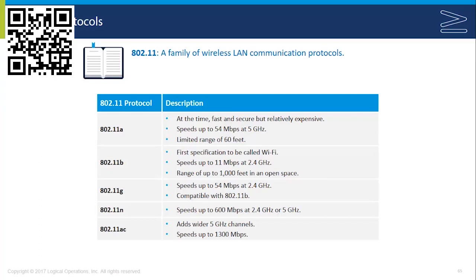802.11a was introduced as very fast and secure but relatively expensive, with limited range. Its goal was to increase speeds and decrease interference, achieving up to 54 Mbps at the 5 GHz frequency range, which is why it is not compatible with 802.11b. 802.11g also increased speeds up to 54 Mbps but stayed at the 2.4 GHz band, making it compatible with 802.11b. It still suffers from interference.